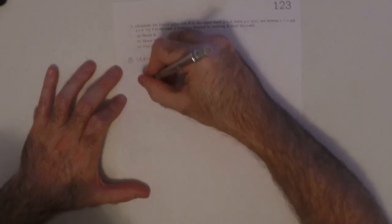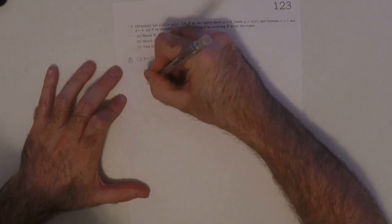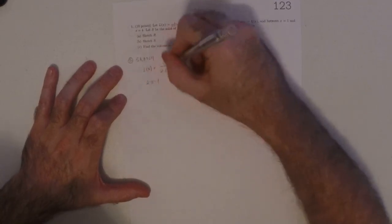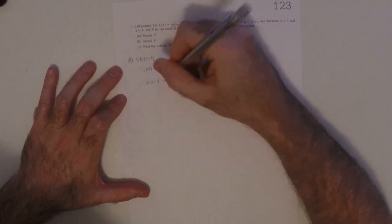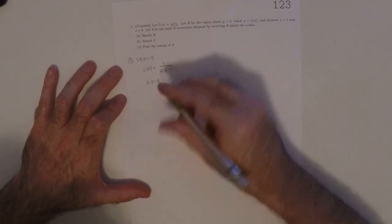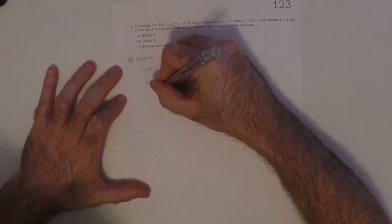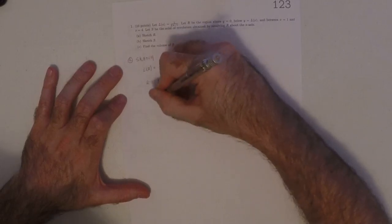Notice that 2x minus 1, you can't divide by 0, so I'm going to solve for 0 real quick to figure out where the problem is going to be.